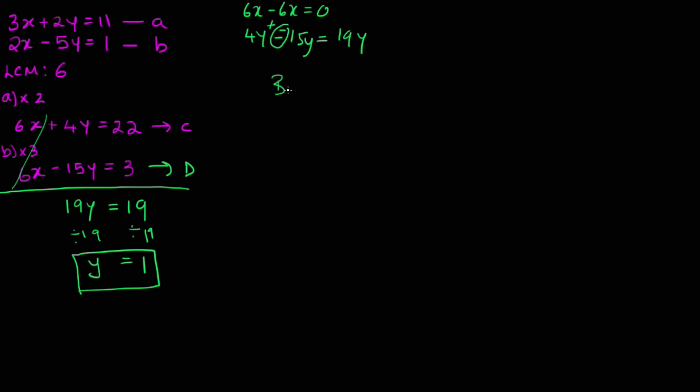Right. So by substituting Y equals to 1 onto equation, which one? A, B. Yeah, A. It doesn't matter which one. Equation A, we have 3X plus 2 bracket 1. Okay. Keep looking at that. Good. Then what do I do?